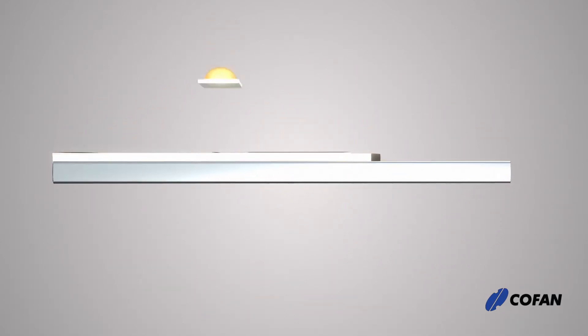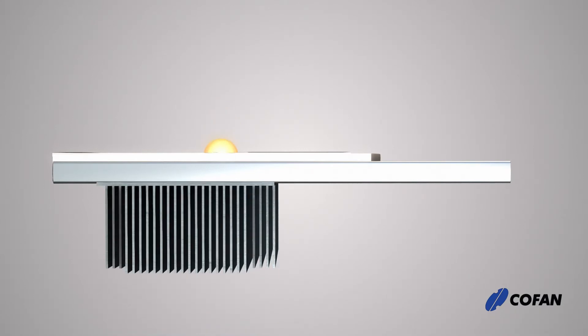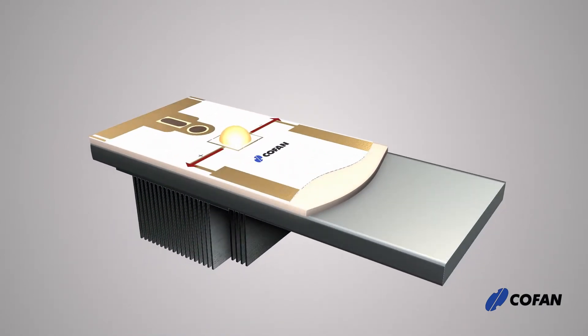LEDs are assembled on the top, and the MCPCB is attached to a heat sink. Heat travels from LEDs across the surface of the MCPCB down through to the attached heat sink.